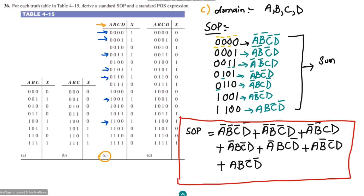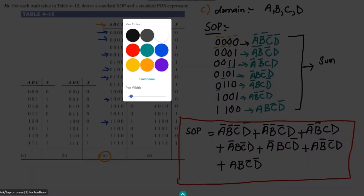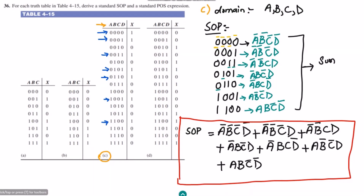This is the sum of products — the solution for part C. To find the product of sums, we identify all terms for which the output is zero and write the sum for each such term, similar to what we have done in previous questions. For part D, you can solve it using the same procedure. If you have any questions, ask in the comment box. Take care and see you in the next video.